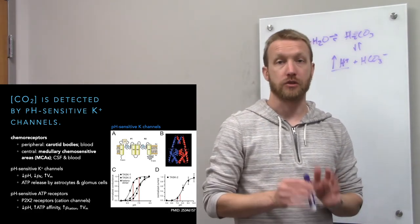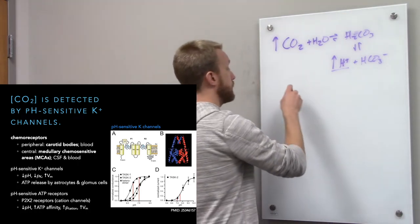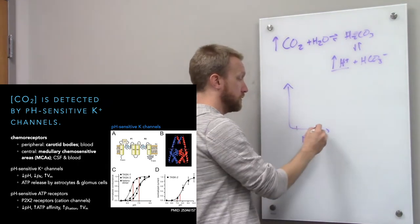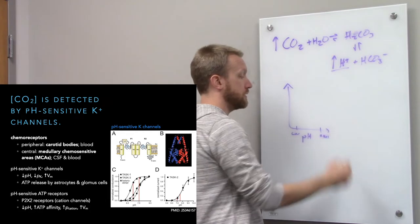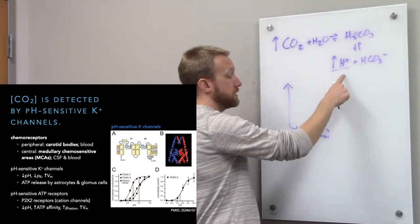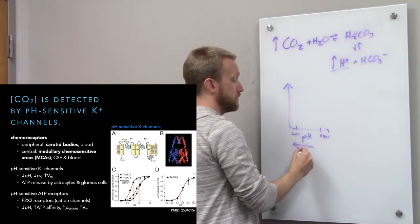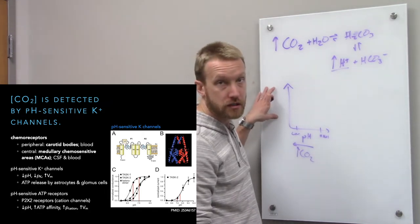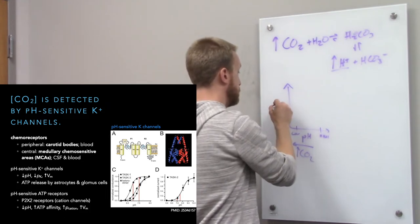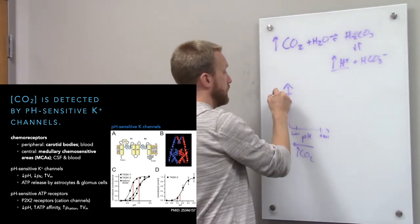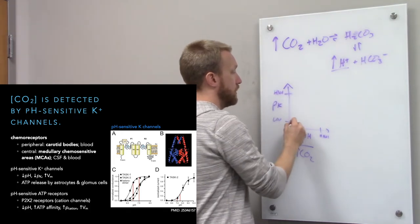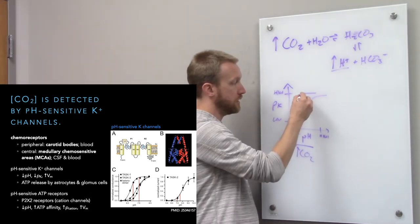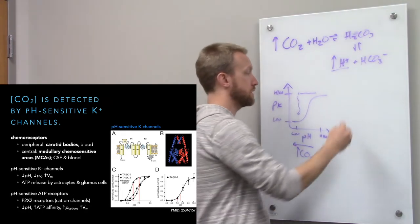A drop in pH causes the potassium channels to close, as shown in panel D. They show pH on the x-axis — low pH on the left, high pH on the right — and conductance through the potassium channel on the y-axis, high to low. If we increase carbon dioxide, that drops the pH and decreases potassium conductance.